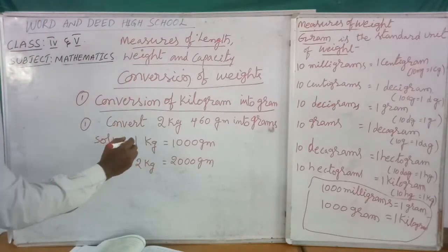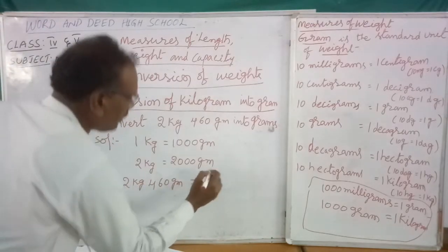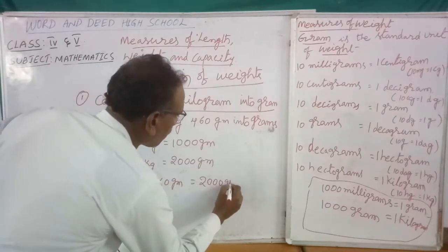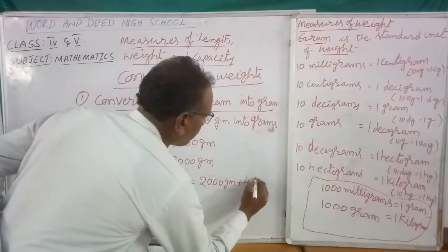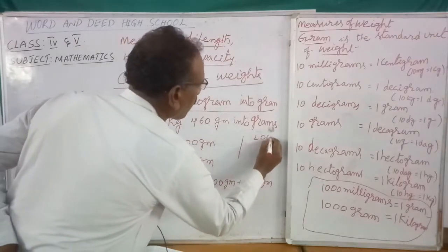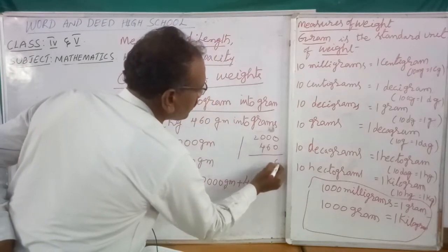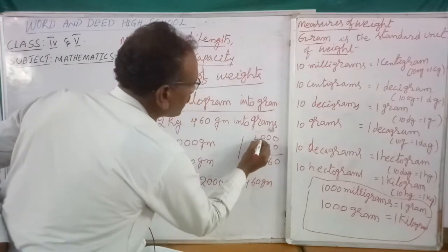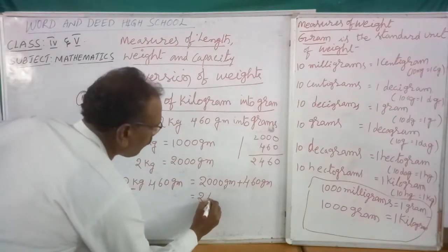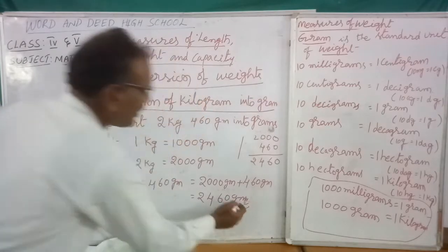So 2 kilograms 460 grams equals 2 kilograms converted to 2000 grams, plus 460 grams. Total: 2000 plus 460 equals 2460 grams. This is the answer.